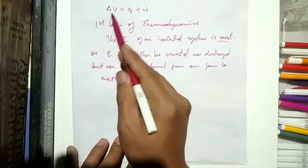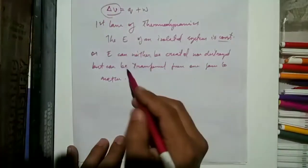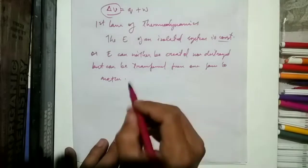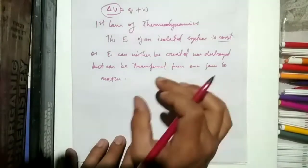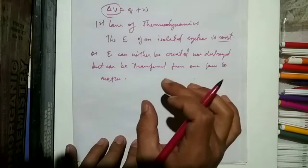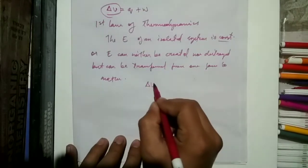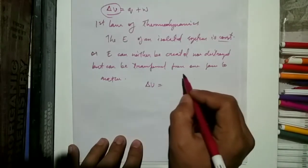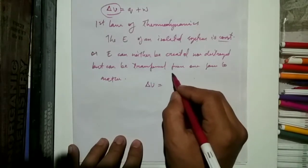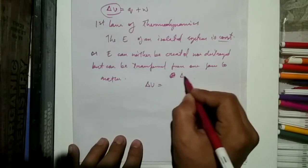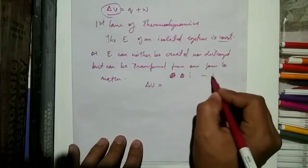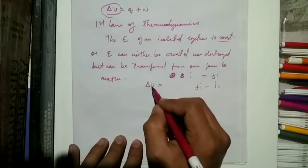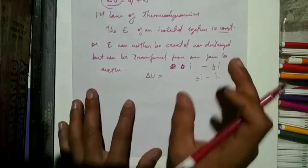An important note: we cannot determine the absolute internal energy of a system. Only the change in internal energy, ΔU, can be determined — by finding the initial and final values and subtracting: ΔU = U_final − U_initial.